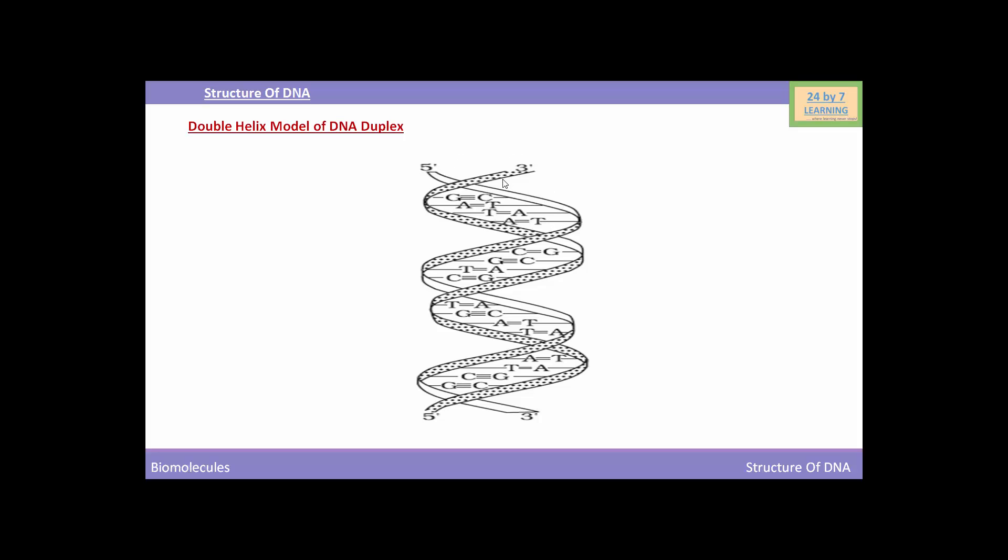There is a complementary base pairing. That means guanine of one strand pairs with cytosine of other strand. Similarly, adenine of one strand pairs with thymine of the other strand. This type of pairing is called complementary base pairing.